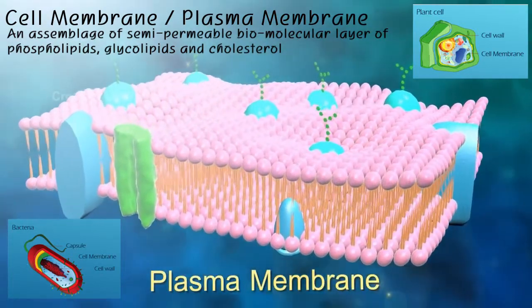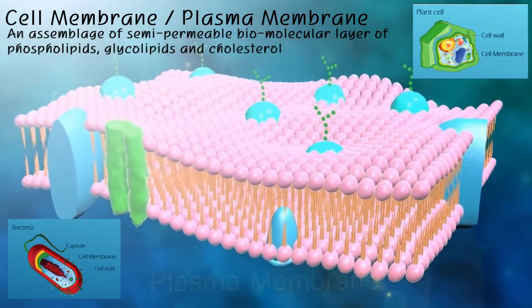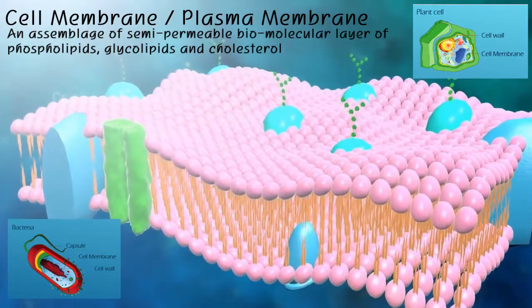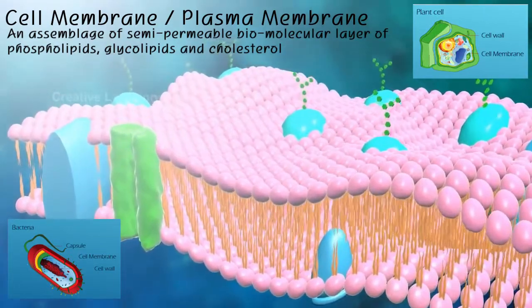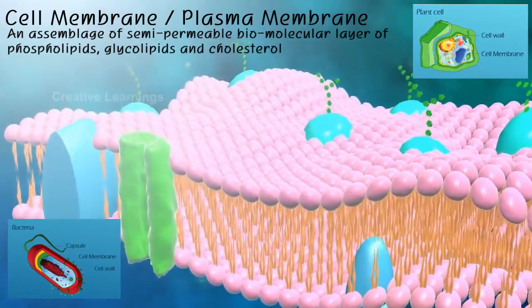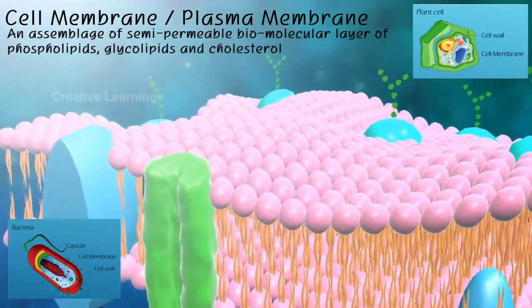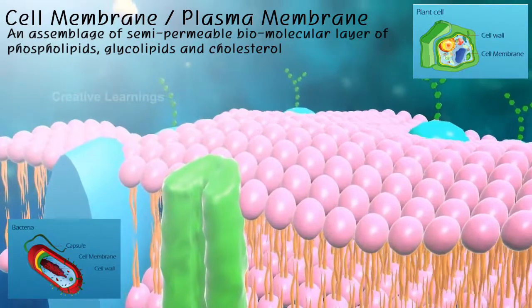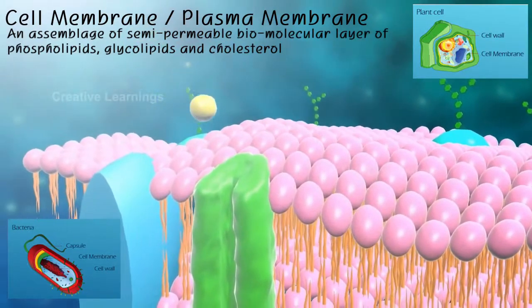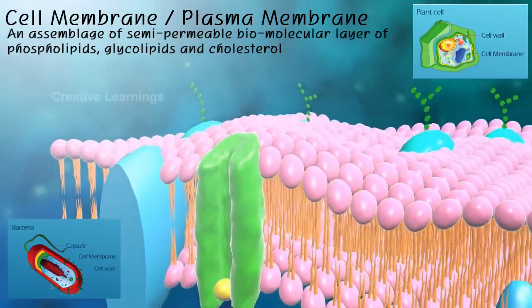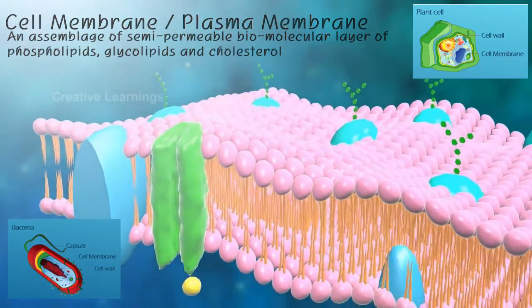There are three layers: the inner cell membrane, the middle cell wall made of peptidoglycans, and the outer capsule that invokes pathogenicity.